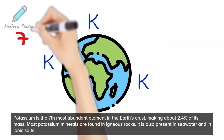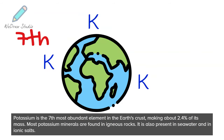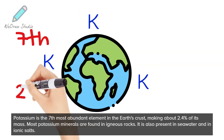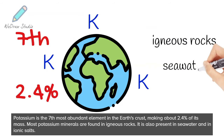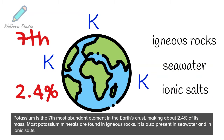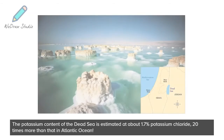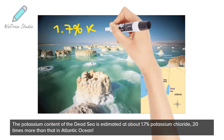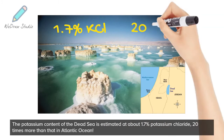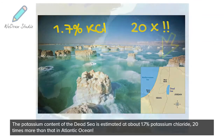Potassium is the seventh most abundant element in the Earth's crust, making up about 2.4% of its mass. Most potassium minerals are found in igneous rocks. It is also present in seawater and in ionic salts. The potassium content of the Dead Sea is estimated at about 1.7% potassium chloride — 20 times more than that in the Atlantic Ocean.